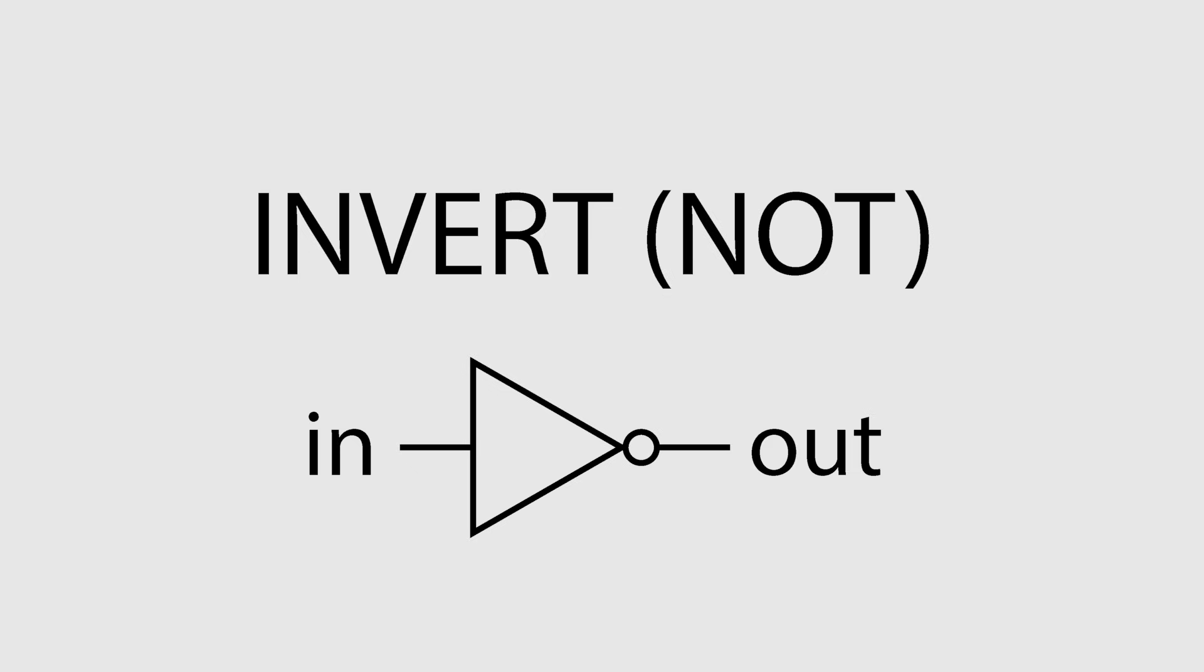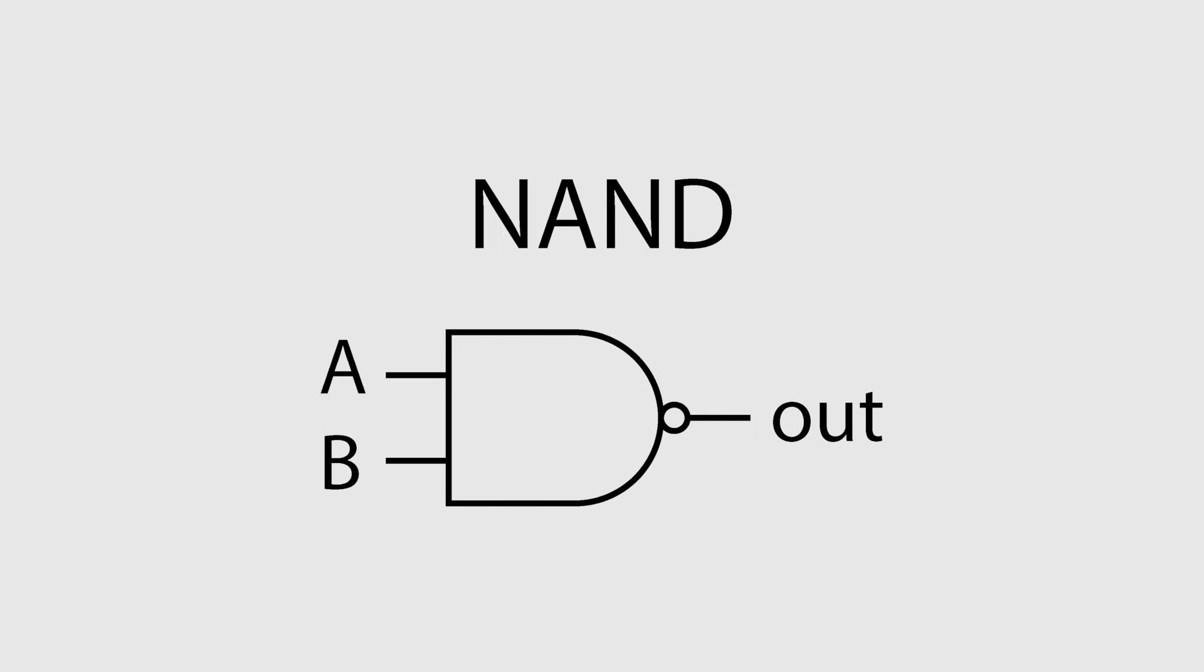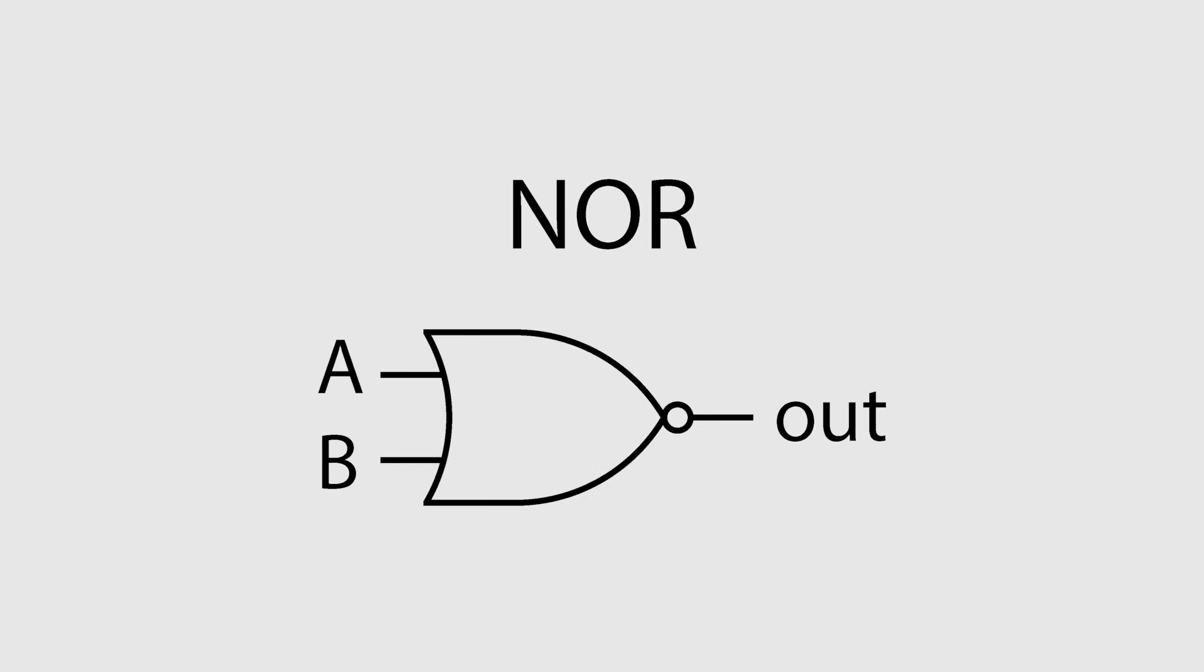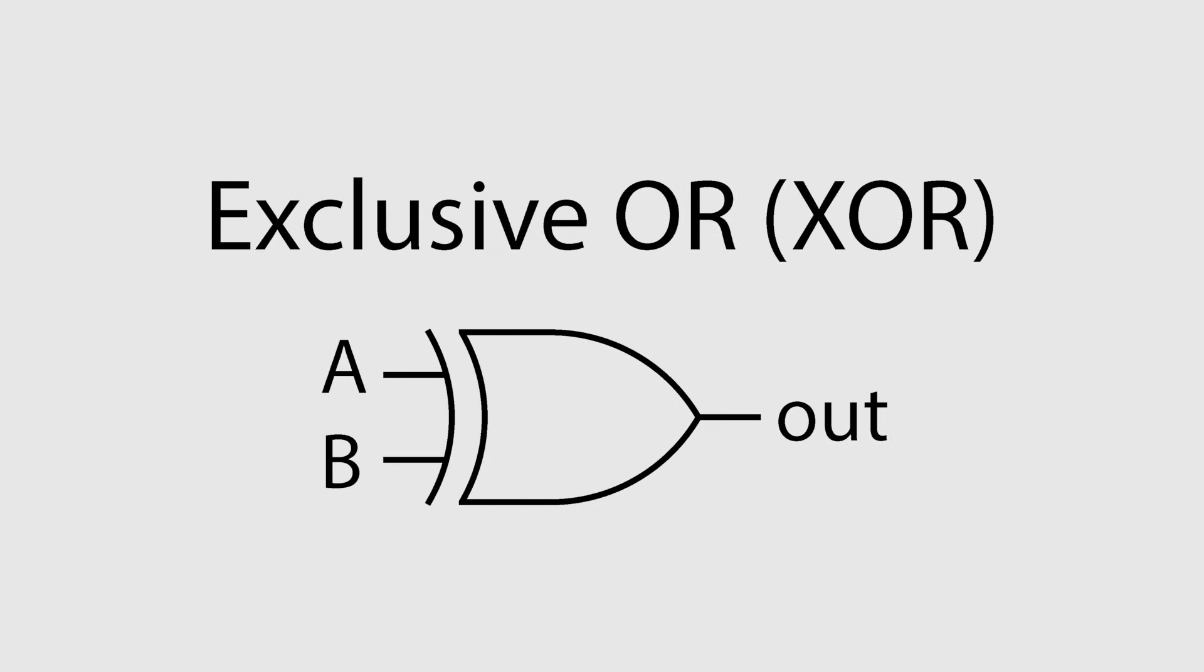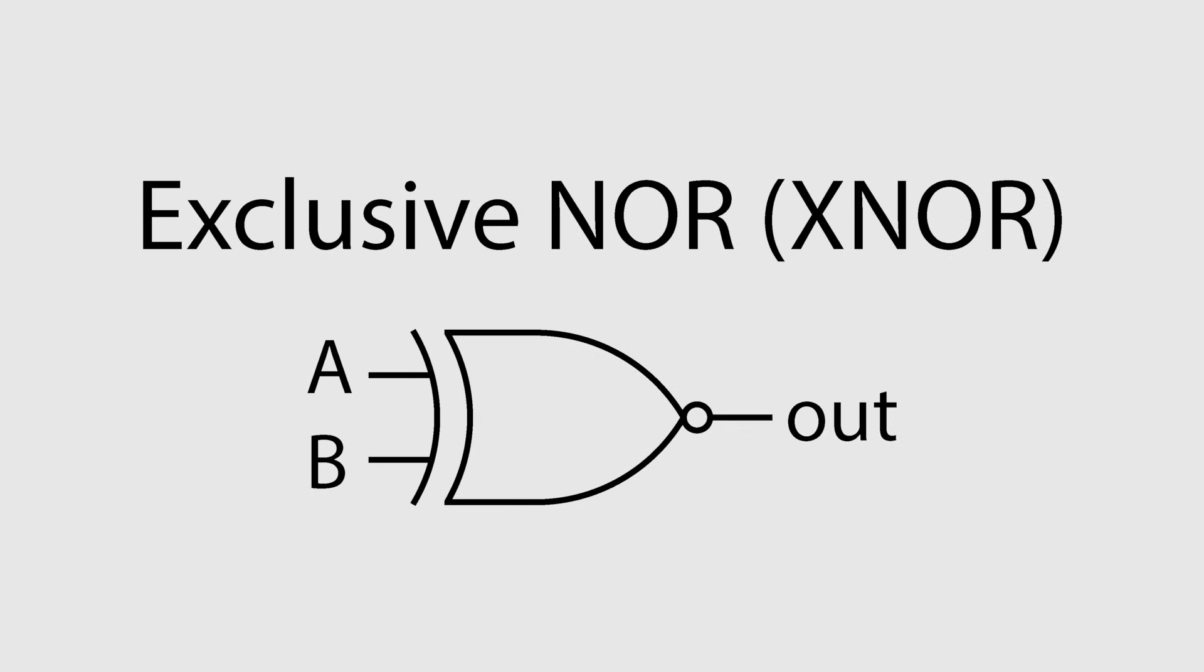Logic gates are the building blocks of digital electronics. The fundamental logic gates include invert, also called a NOT gate, AND, NAND, OR, NOR, exclusive OR, called XOR, and exclusive NOR, called XNOR.